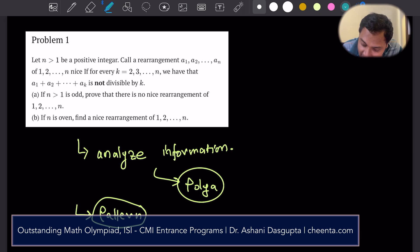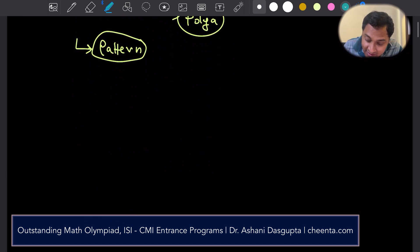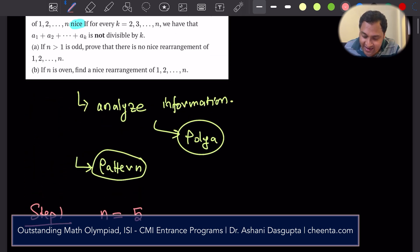There are certain arrangements of the numbers from 1 to n which are nice arrangements. So 1 to n. To understand the first problem, the first step is to actually choose n. So let's say n equals 5. Choose n, some number n. What is it saying?